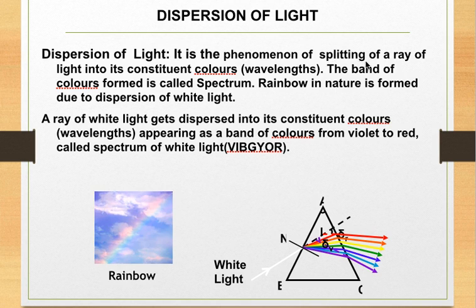Now what's dispersion? The dispersion of light is the phenomenon of splitting of a ray of light into its constituent colors or wavelengths. The band of colors formed is called the spectrum. Rainbow in nature is formed due to dispersion of white light. This is the rainbow formed by dispersion of white light due to the rain droplets.